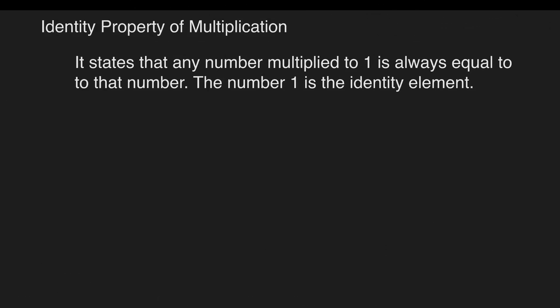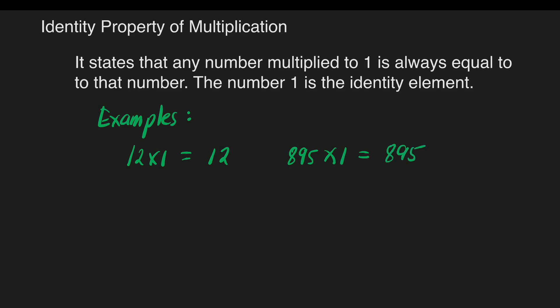Another one: we have the identity property of multiplication. It states that any number multiplied by 1 is always equal to that number. The number 1 is the identity element. Examples: 12 times 1 is equal to 12. Another example is 895 times 1 is equal to 895. Next, 6450 times 1 is still equal to 6450.